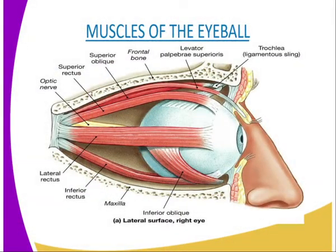In amphibians, reptiles, birds, some fish, and some mammals, there is a transparent membrane called the nictitating membrane which is drawn across the eye to clean it.